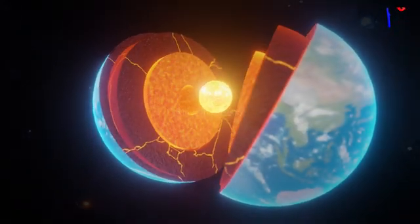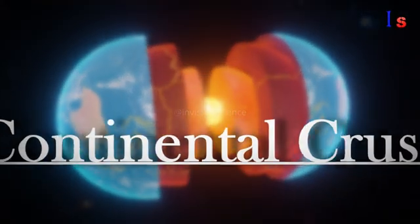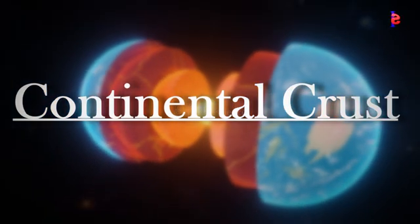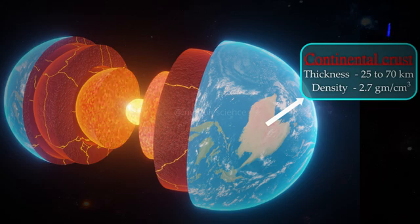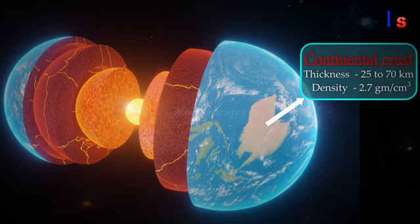First, we will learn about the uppermost layer of the Earth which is called the continental crust. The thickness of this layer can range from 25 to 70 km and its density is lower than all the other layers of the Earth.